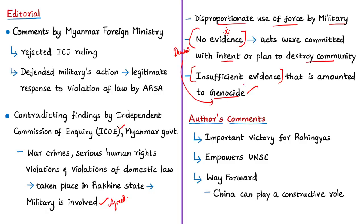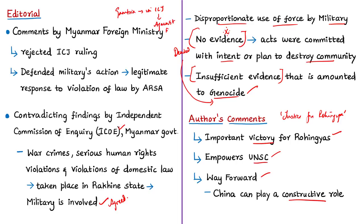Based on these reports, orders, and events, the author notes that the ICJ ruling is an important victory for Rohingya refugees — hence this editorial is titled 'Justice for Rohingya.' The ruling also empowers the UN Security Council to prevail upon Myanmar to take appropriate measures for rehabilitation and repatriation of displaced Rohingya communities. As a way forward, the author suggests that China could play a constructive role to ensure a speedy return of normalcy in its neighbor Myanmar.